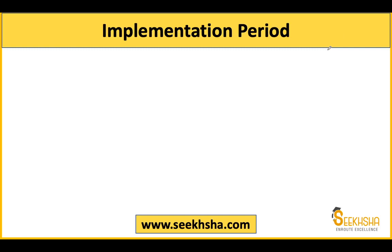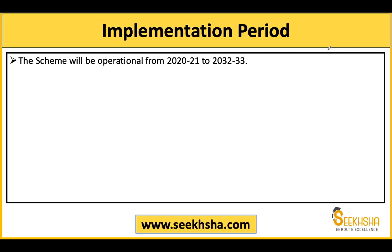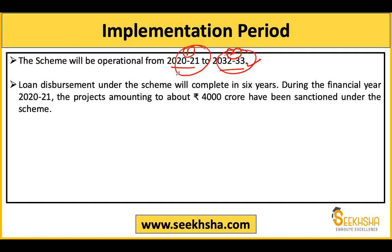Now let's talk about the objective part. The Agriculture Infrastructure Fund scheme runs from 2020-21 and will end in 2032-33. This is a very important fact — the examiner can ask both the start date and end date, or both together, so remember them.